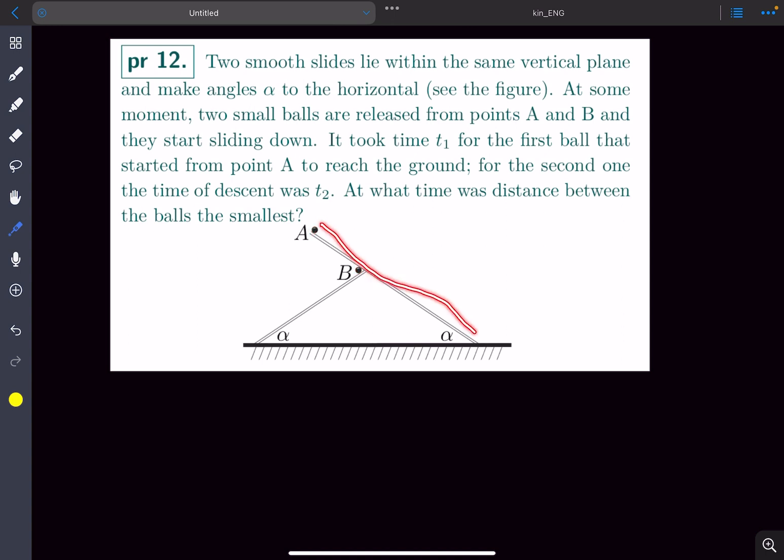It takes ball A time t1 to reach the ground and ball B time t2 to reach the ground. We have to find the time at which the distance between these two balls is minimum.